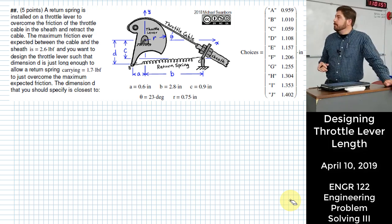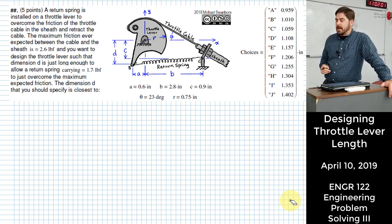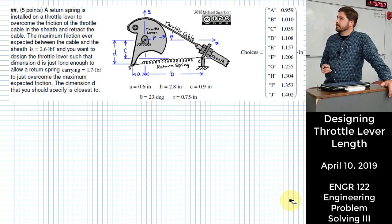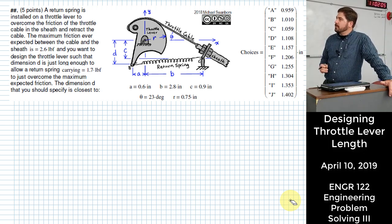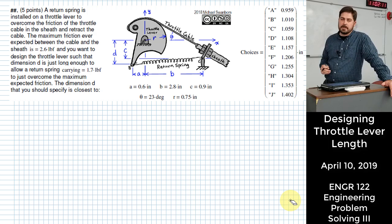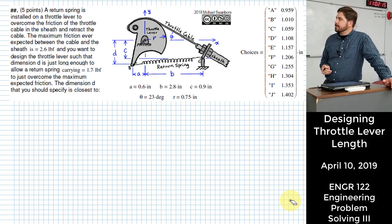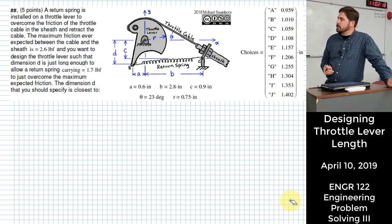Alright for this problem we have a throttle lever being actuated by a throttle cable. Somehow we've been able to determine that there will be a friction force between the throttle cable and the sheath that carries it of 2.6 pounds.